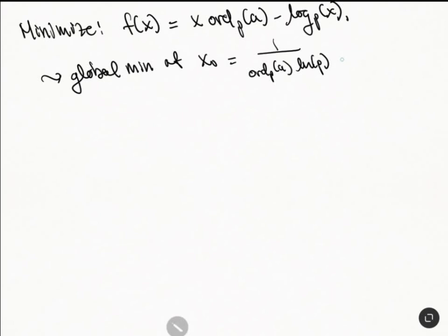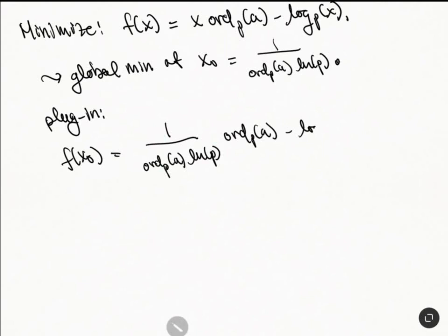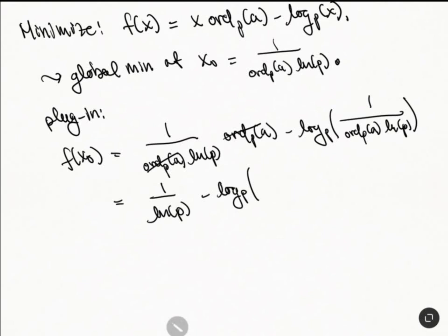So we plug in. So once we plug this in, we get that f(x_0) is 1 over ord_p(a) times natural log of p times ord_p(a) minus log_p of, and now we plug it in again, 1 over ord_p(a) times natural log of p. These things go away, and so then you get 1 over natural log of p plus log_p of ord_p(a) times natural log of p.